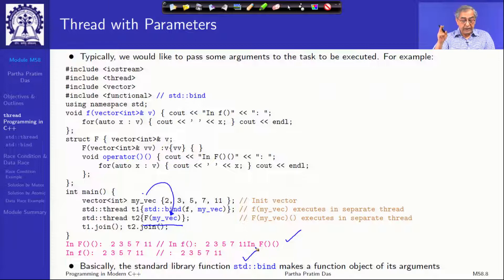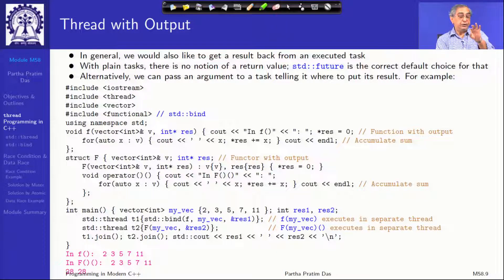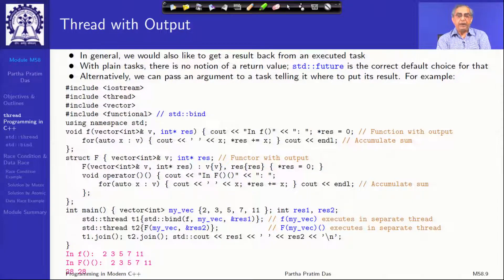Running it multiple times, you will see in some cases the functor runs first and sometimes the function runs first — it is indeterminable. To get output from a thread, since there is no return value for a plain task, you can pass a pointer or reference parameter. For example, pass the vector as input and a pointer to a result integer, where the thread computes the sum of vector elements. After both threads have joined, you can print the results.